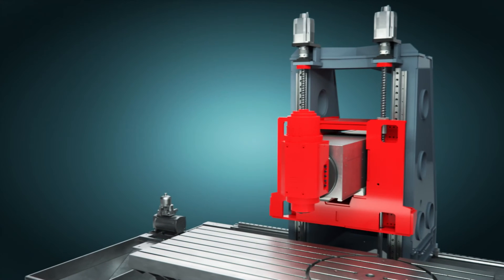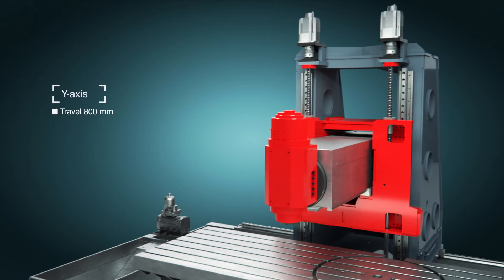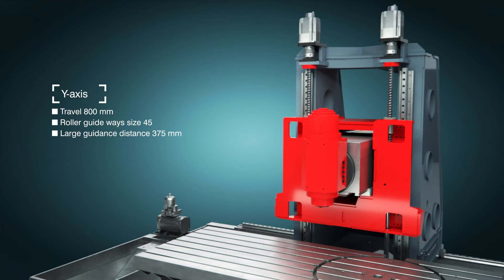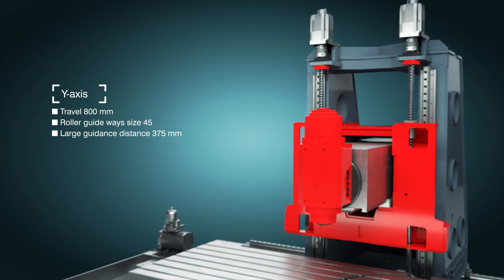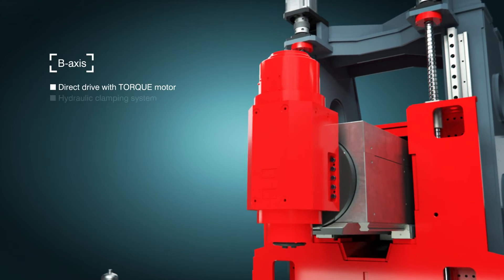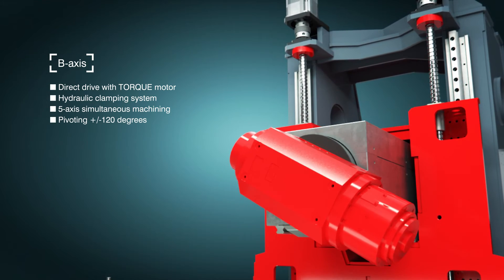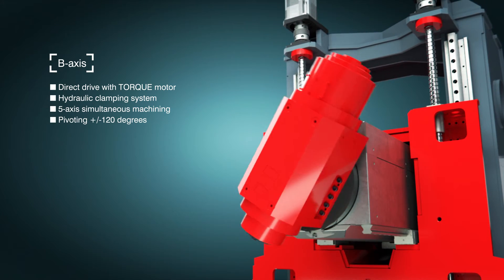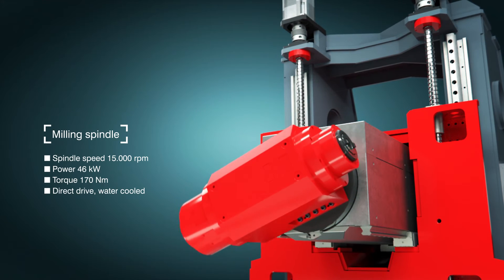The water-cooled milling spindle, featuring a speed range of up to 18,000 revolutions per minute, is particularly powerful. Optimum machining results are guaranteed with a drive power of 46 kW and a torque of 170 Nm.